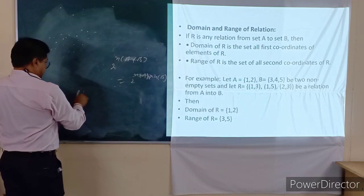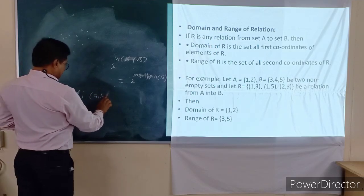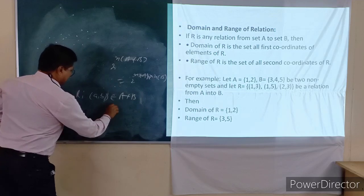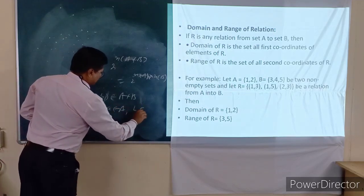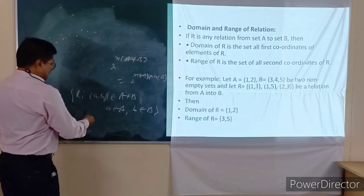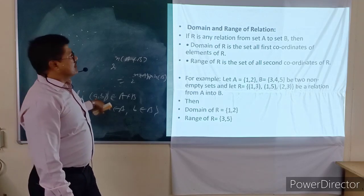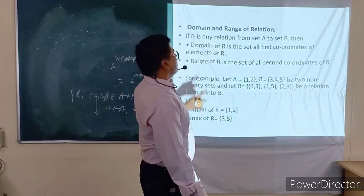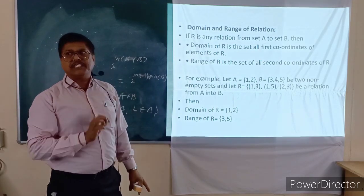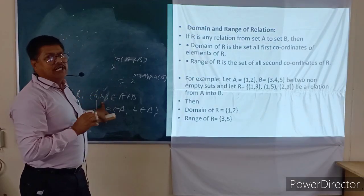In any relation, suppose a pair (A, B) belongs to A cross B, where A belongs to set A and B belongs to set B. In this relation, the first component is known as the Domain of that relation, and the second component is known as the Range of that relation.